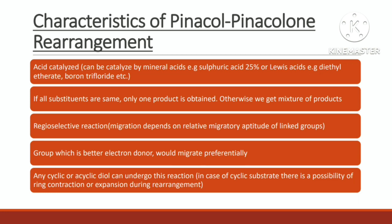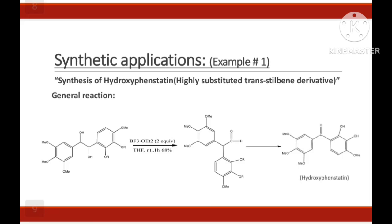If all the substituents attached around vicinal diol are same, we get only one product. Otherwise, we get mixture of products. This reaction is regioselective in nature. The group which is better electron donor would migrate preferentially. For example, in case of alkyl or aryl group, aryl group has better migratory aptitude as compared to alkyl group. Secondly, aryl group is better electron donor than alkyl group. Any cyclic or acyclic diol can undergo this reaction.